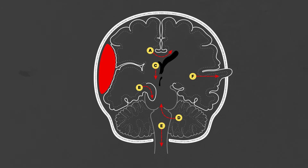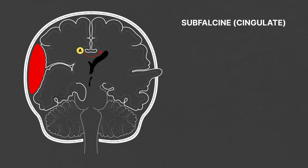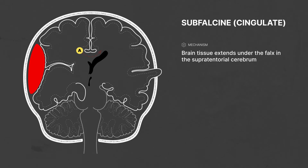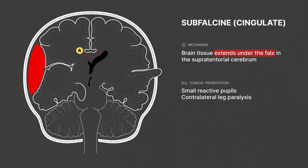Here is a diagram of some of the most common types of brain herniation syndromes. With subfalcine herniations, brain tissue extends under the falx in the supratentorial cerebrum, causing small reactive pupils and contralateral leg paralysis.